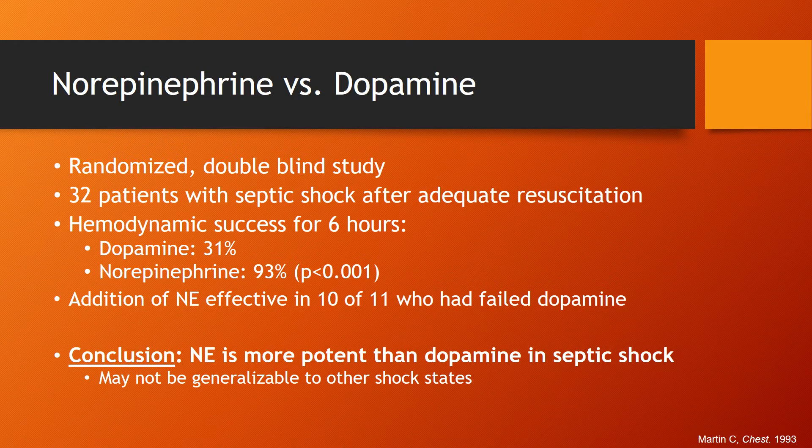A randomized double-blind trial compared norepinephrine versus dopamine in 32 patients with septic shock after adequate resuscitation. Only 31% of patients receiving dopamine maintained hemodynamic success for six hours, compared to 93% of patients receiving norepinephrine. Additionally, 10 of 11 patients who failed dopamine required norepinephrine to be added. The conclusion was that norepinephrine is more potent than dopamine in septic shock, though this cannot be generalized to other shock states.